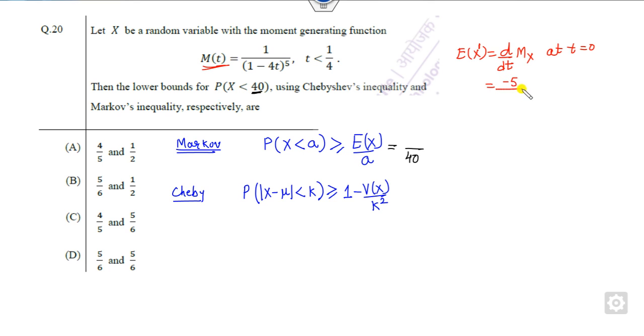This is minus 5 upon 1 minus 4t raised to power 6 times minus 4. What is the value at t equals 0? It is plus 20, so if you substitute here, the answer is half, so it means these two options are cancelled.